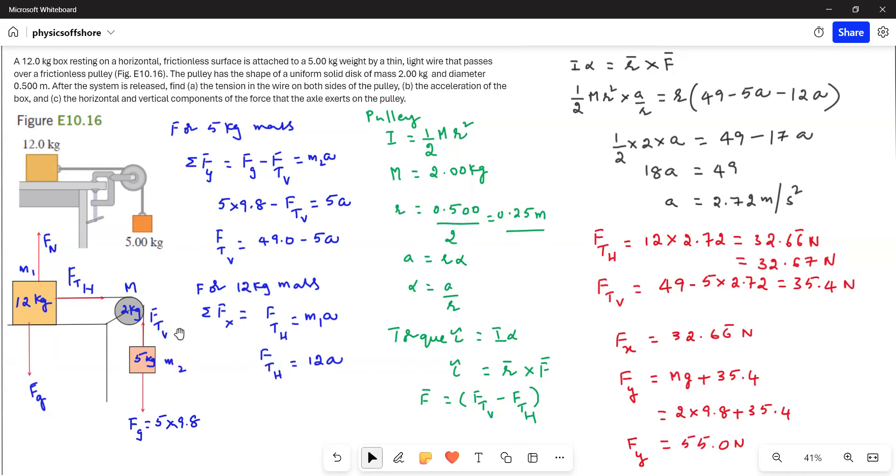Vertical tension produces the clockwise moment, whereas the horizontal tension produces the counterclockwise moment. Now I alpha equals r cross F bar, and then the equations we have: half mr squared times alpha, which is half mr squared times a by r, equals r times 49 minus 5a minus 12a.